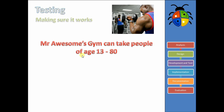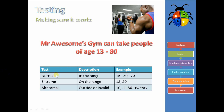Well, to do that we have to come up with different types of test data. The three types of test data are: first of all, normal data. This is data that is as we expect it to be, or within the range. So for 13 to 80, inside the range would be say 15, 30, or 70 — that would be normal test data. The next one would be extreme test data. This is where you test on the ranges. So in this case, 13 and 80 are our limits, so our test data would be 13 and 80. Notice that this is still valid at this point.